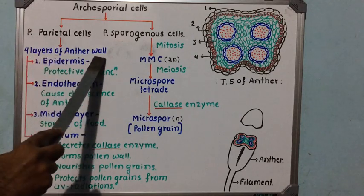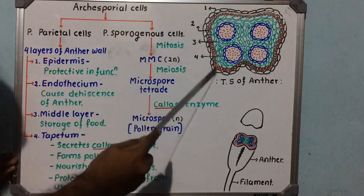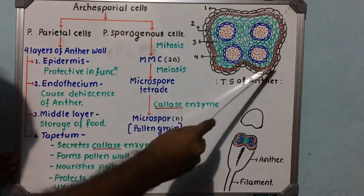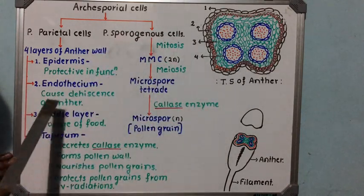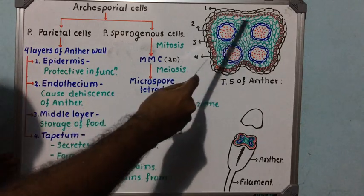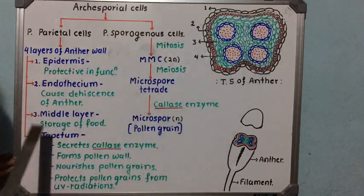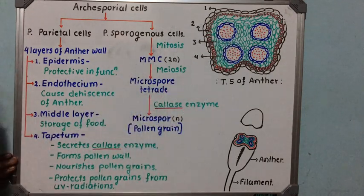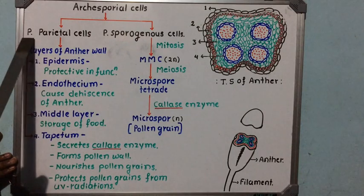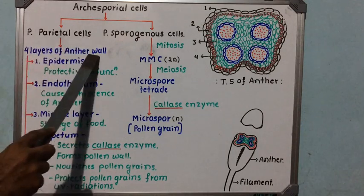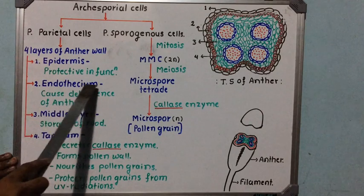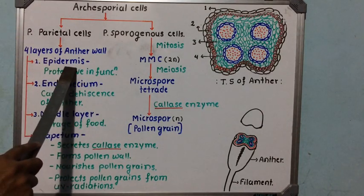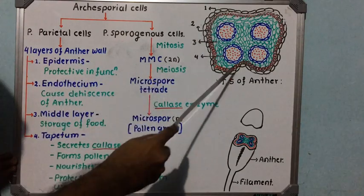The primary parietal cells undergo mitosis and give rise to four layers of the anther wall: the epidermis (outermost layer), endothecium (the red layer), middle layer (the green portion), and tapetum (the blue layer). The epidermis is the outermost single layer of cells and is protective in function.